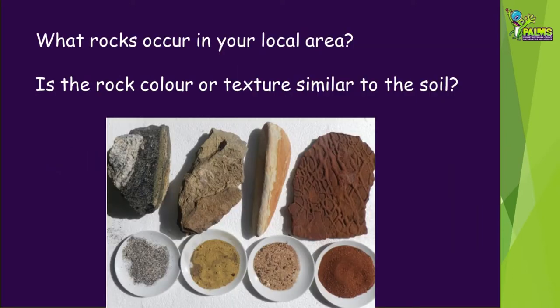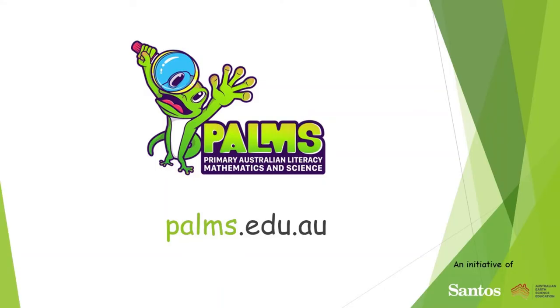Have a look at the rocks in your local area. Does the natural soil have a similar color or texture to the parent rock? Where do the gardens and crops look healthiest around you?